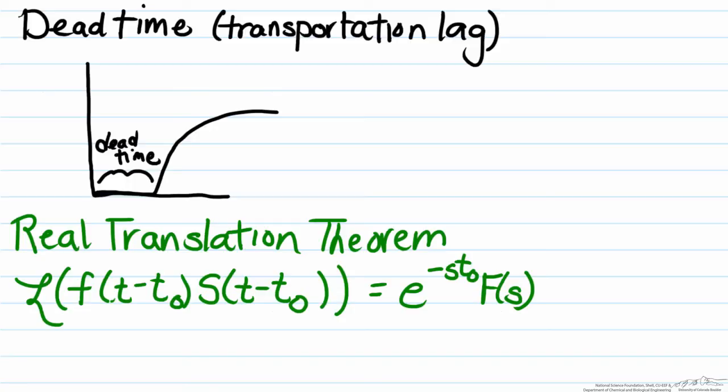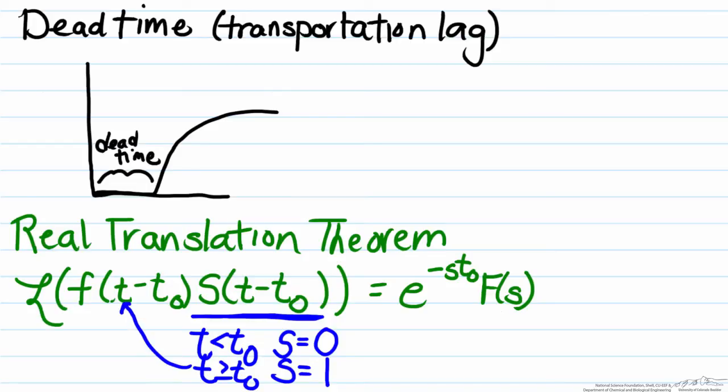Let's take a look at the real translation theorem and what information we can get from it. First let's focus on this s term, the step function, and what this term tells us is that at times less than t₀, the value of this step is going to be zero. So in other words, the term is zero, the entire term. Whereas for times greater than or equal to t₀, s, the value of the step will be one, meaning that the value of this function will be the f(t - t₀) part shown here.